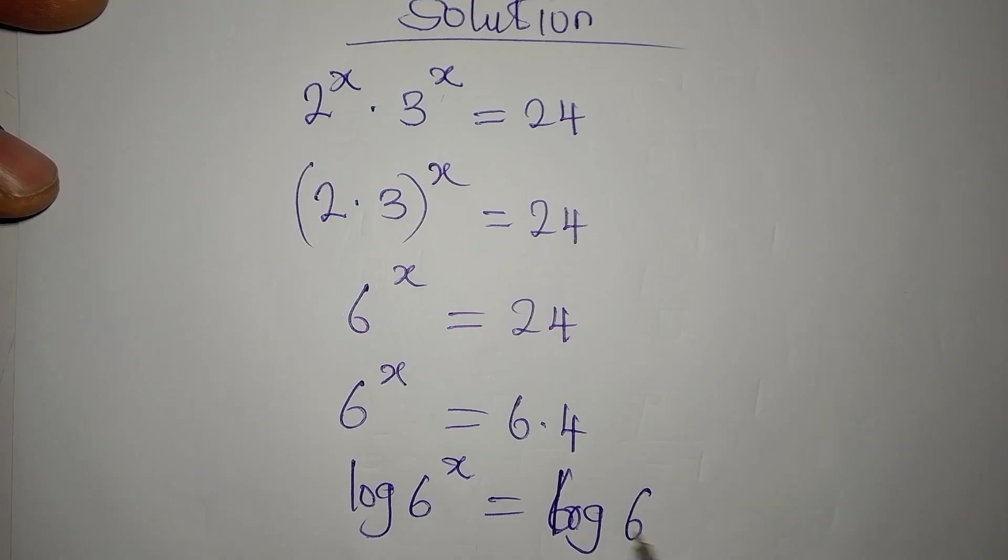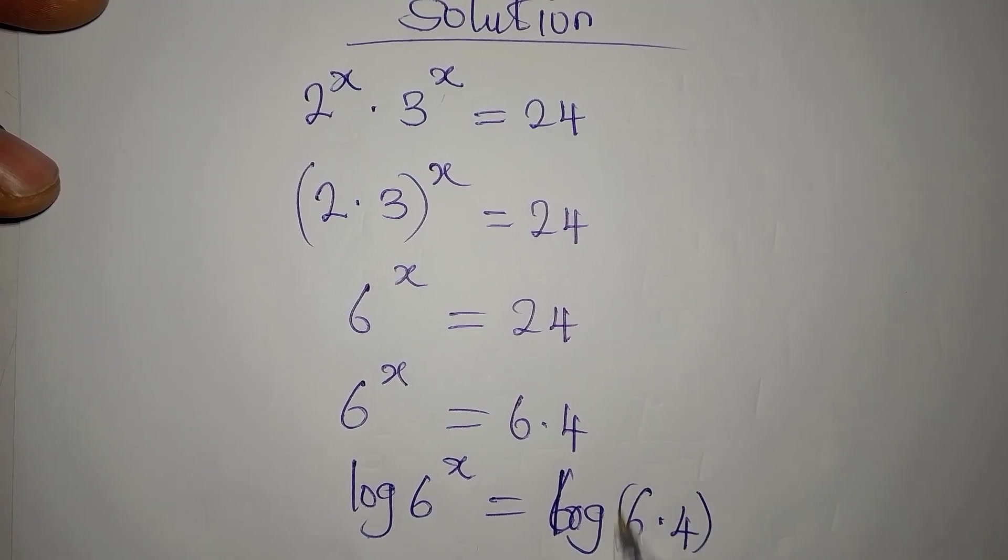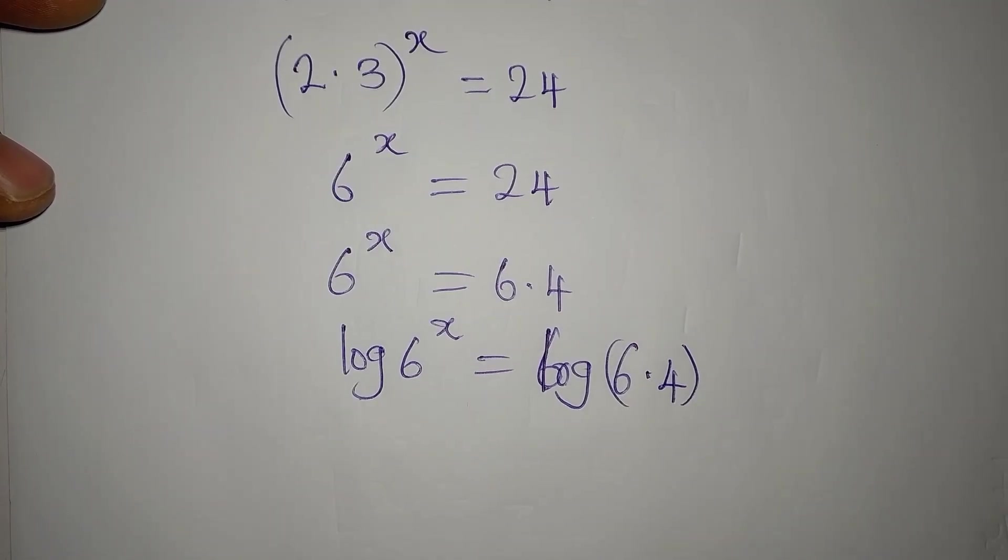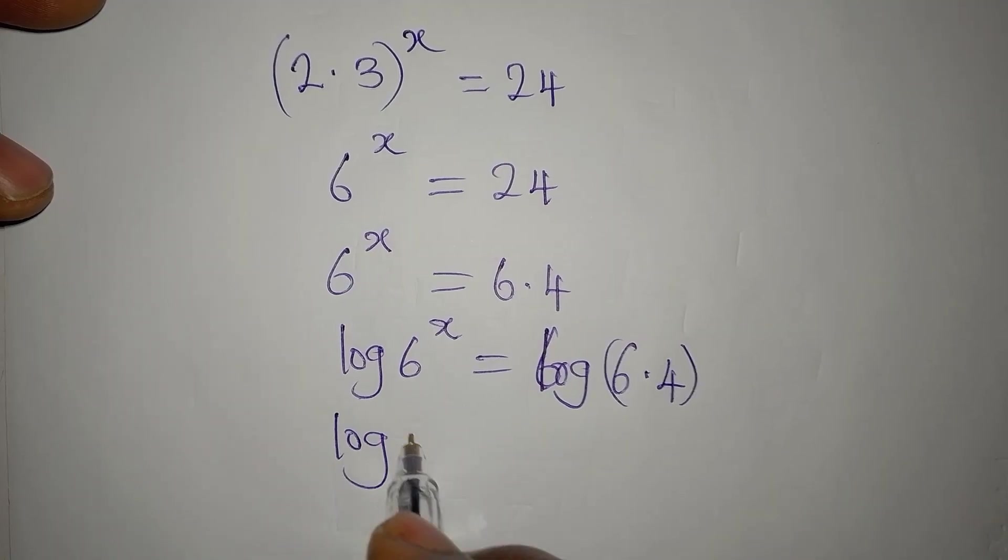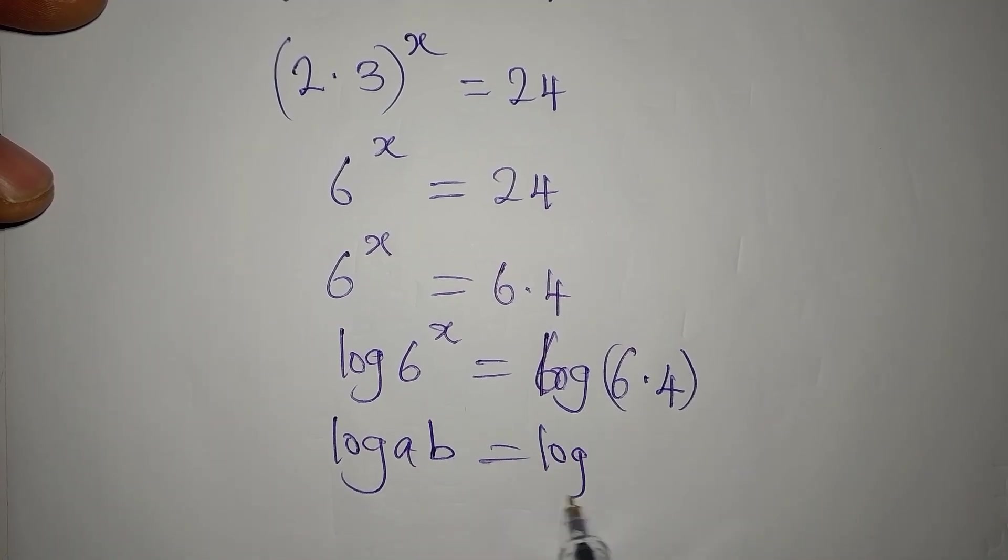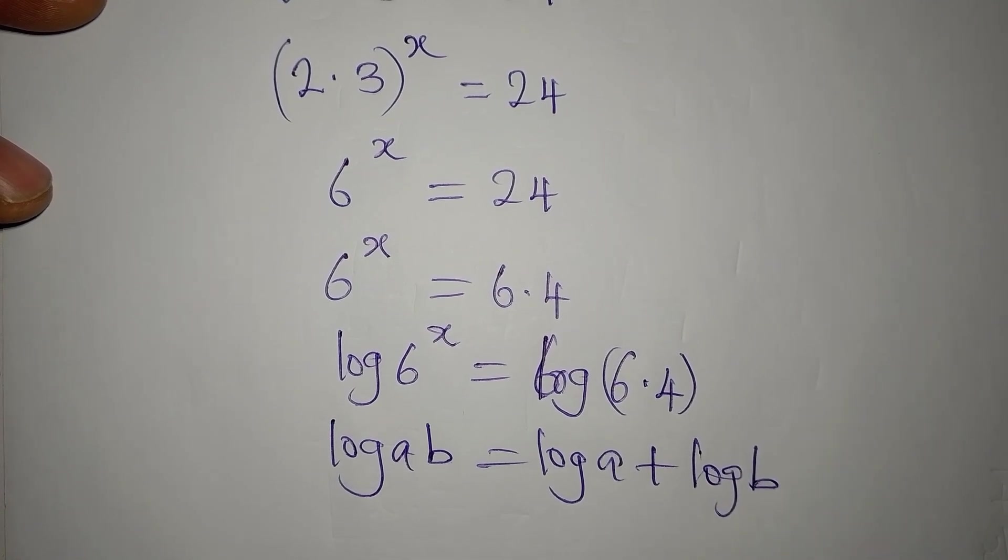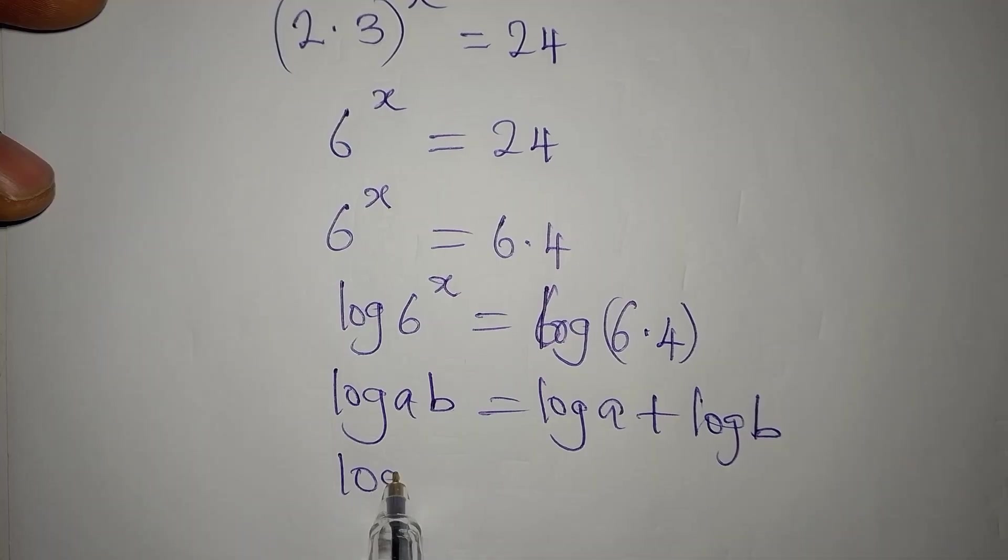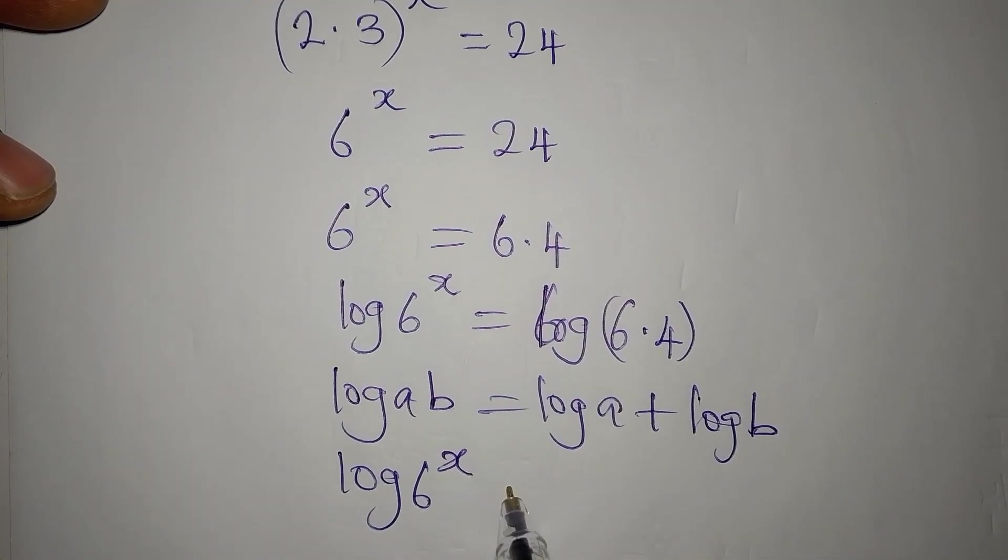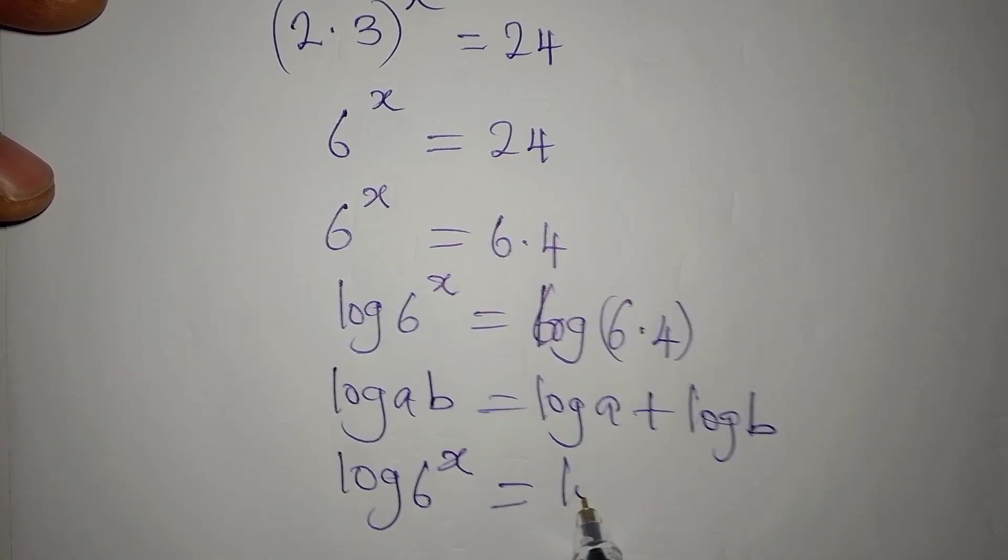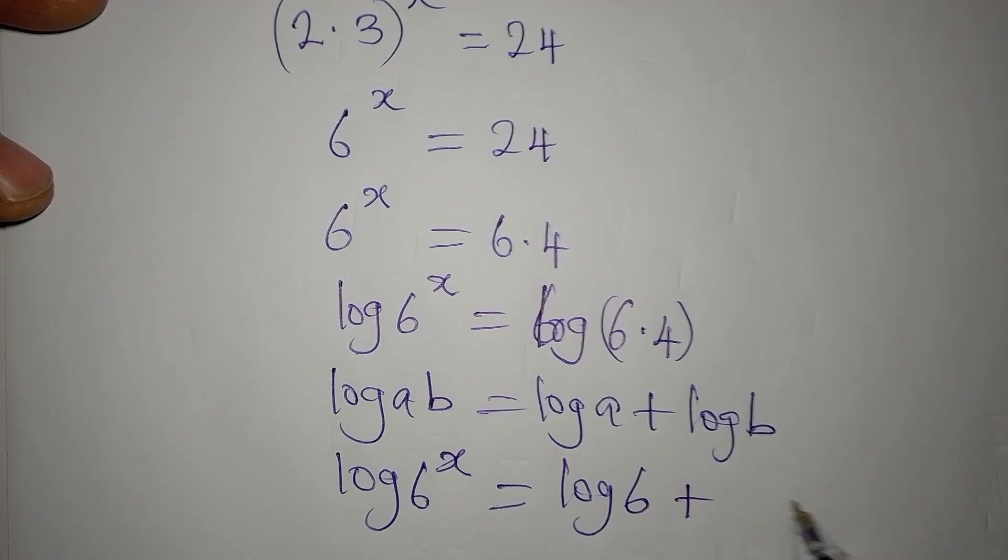This is simple because if we have log ab, it is log a plus log b. So log 6 to the power of x is equal to log 6 plus log 4.